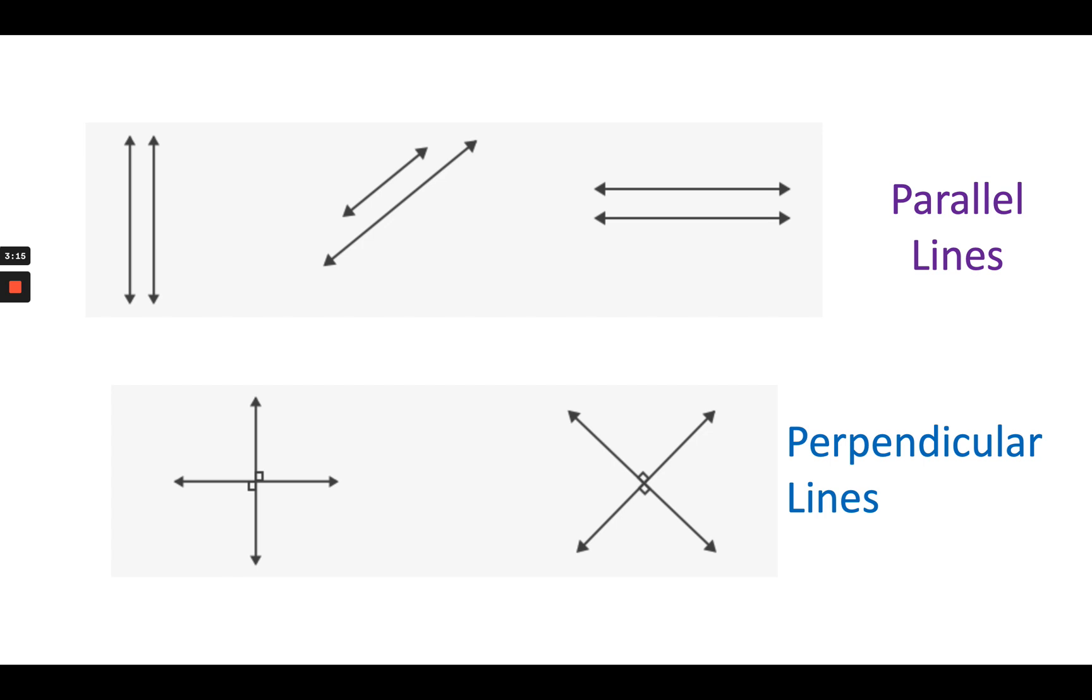Now perpendicular lines are lines that cross at a 90 degree angle. And you'll notice you have the little squares here which tell you those are going to be 90 degrees.